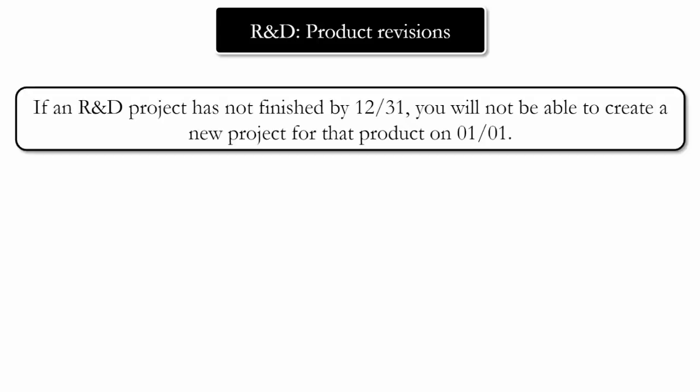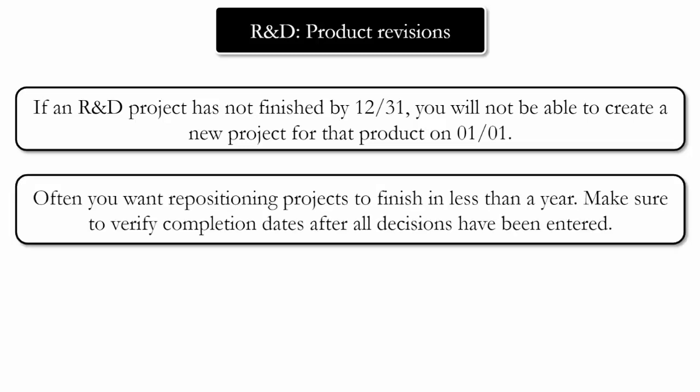When you enter a product's new performance, size, and reliability, the simulation will tell you how long R&D needs to complete a revision. It is possible for revision projects to take longer than one year. However, if an R&D project has not finished by December 31st, it is not possible to create a new project for that product on January 1st of the next year — meaning you will need to wait a year before making additional revisions. In general, you usually want revision projects to finish in less than a year.